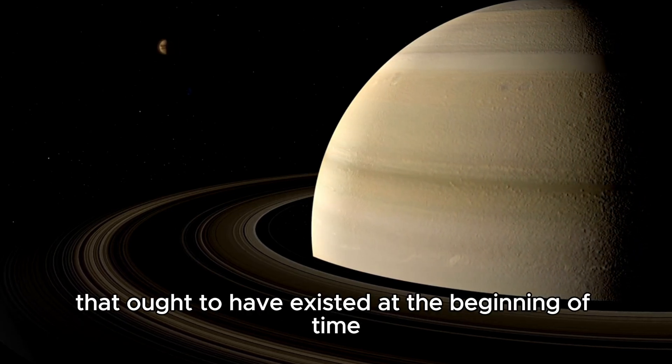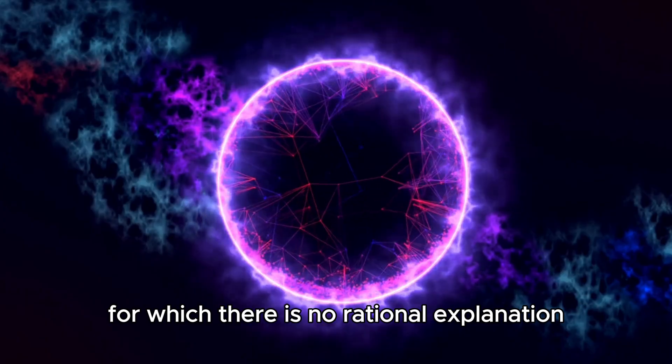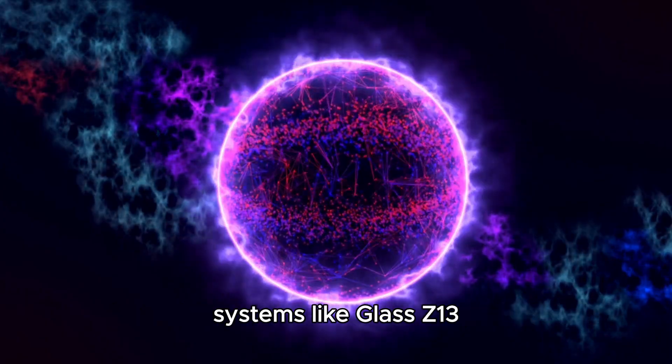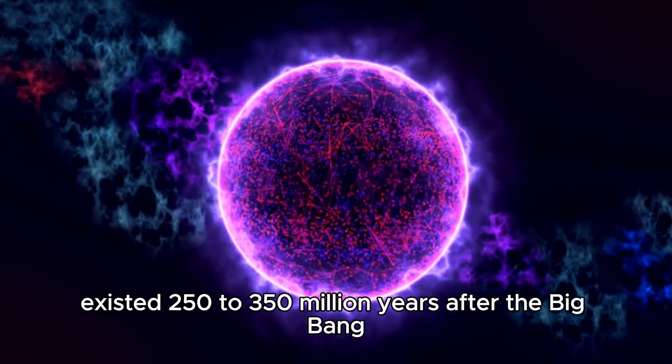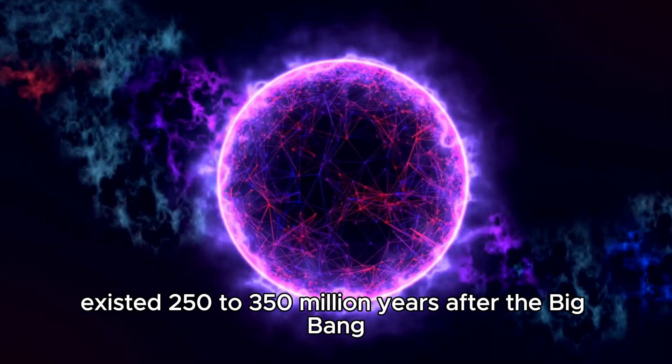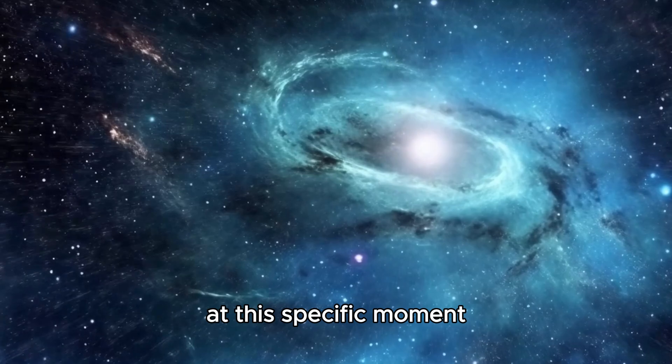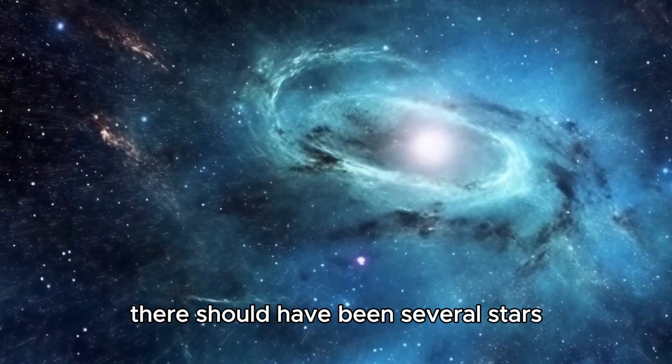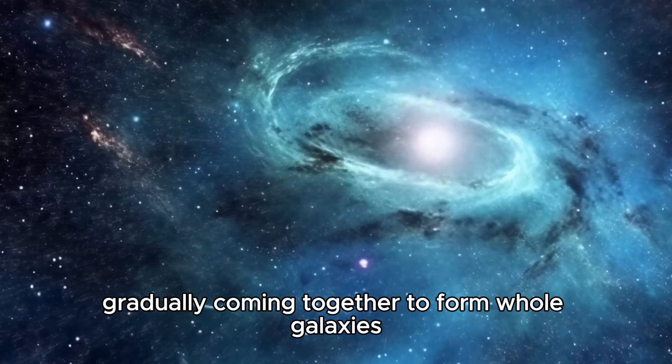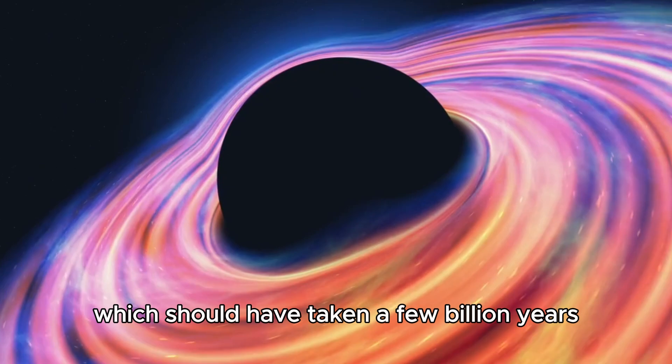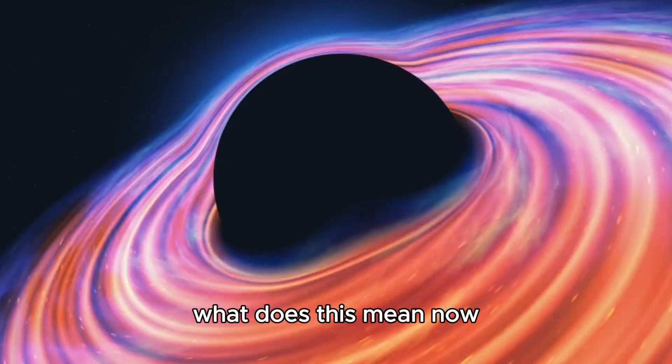To be precise, there are six galaxies that ought to have existed at the beginning of time for which there is no rational explanation. Systems like GLASS Z-13 existed 250 to 350 million years after the Big Bang, and that is theoretically incredible.